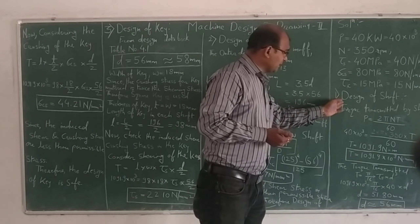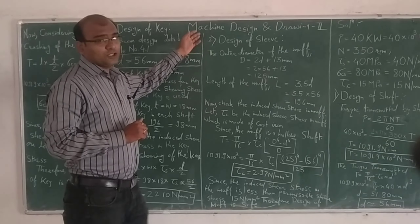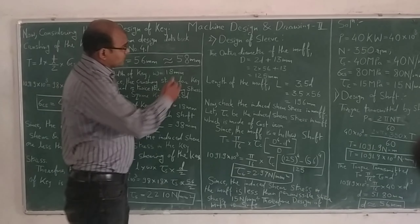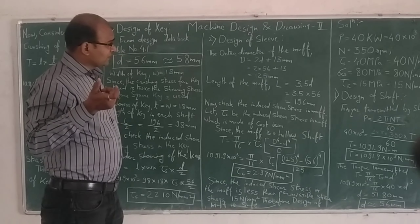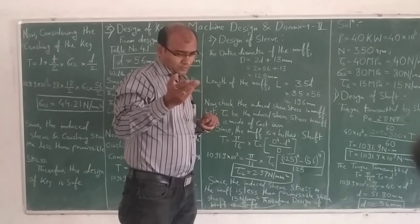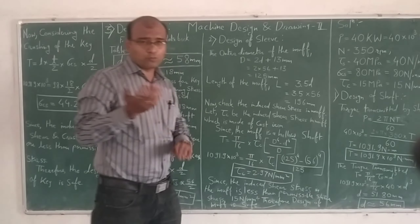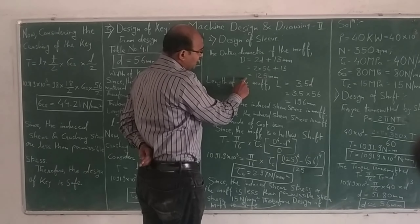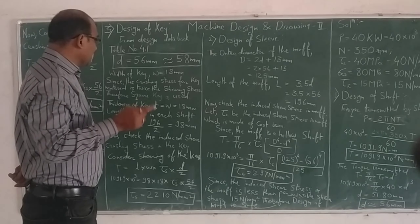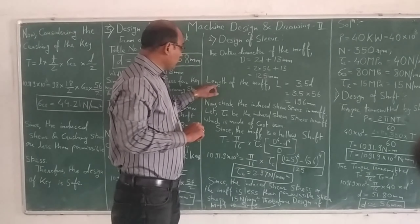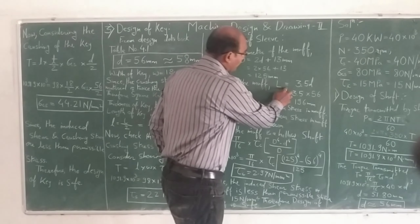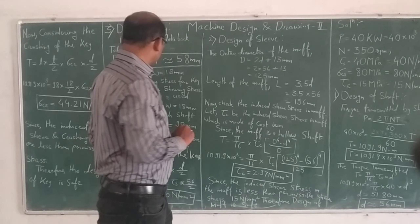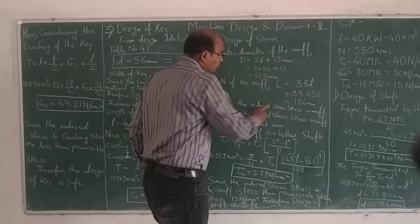The second step is the design of the muff (sleeve). The outer diameter of the muff, capital D, equals 2d + 30 mm. So D = 2 × 56 + 30 = 142 mm. Next, the length of the muff: capital L = 3.5 × d = 3.5 × 56.7 = 196.7 mm.